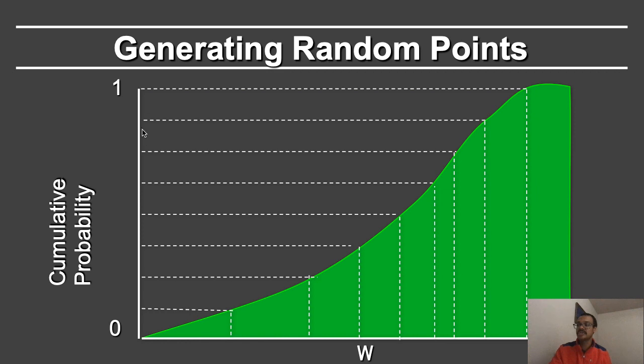And if you want a sample according to the probability distribution function, then you pick a location on the y-axis randomly. Or if you want to stratify the samples, you might pick one sample in the 0 to 0.1, 0 to 0.2, and so on. And then you find where that lies here.